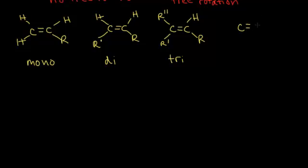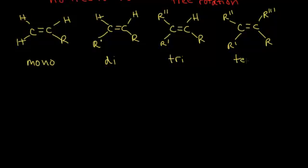Finally, replacing the last hydrogen with a fourth R group gives us R, R prime, R double prime, and R triple prime — four different substituents — making it a tetrasubstituted alkene.